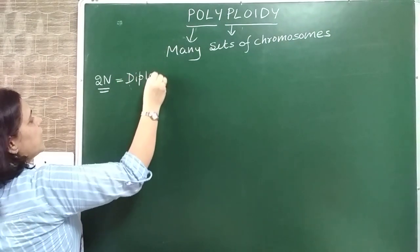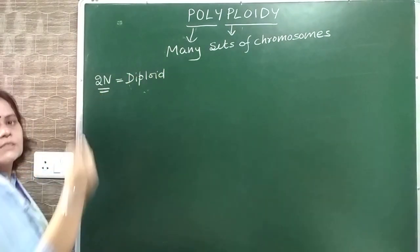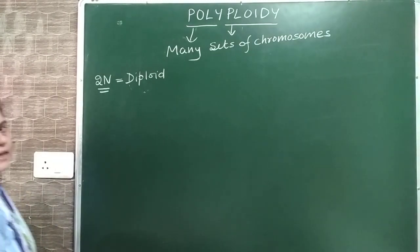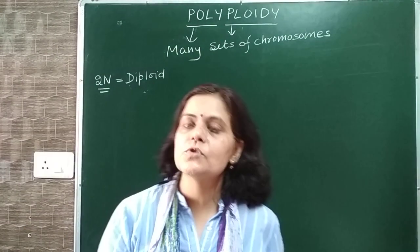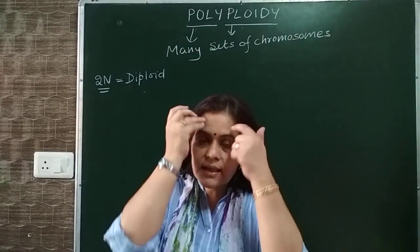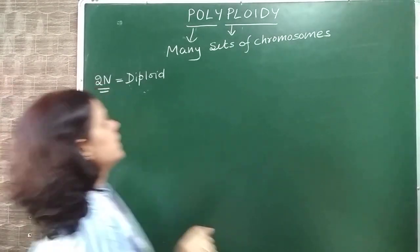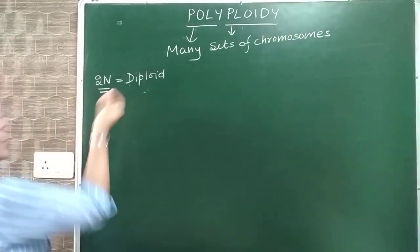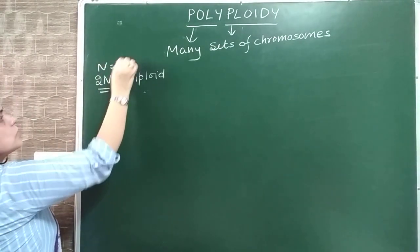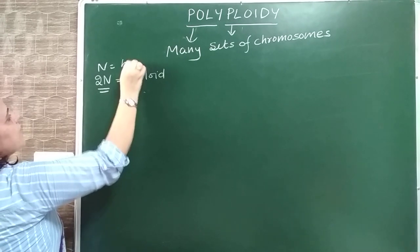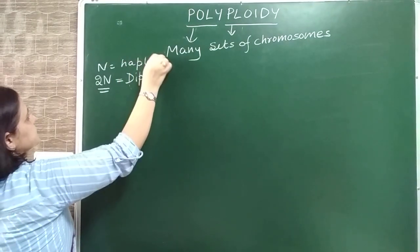If there is a single set of chromosomes, we call it haploid. If there are two sets of chromosomes, we call it a diploid cell.